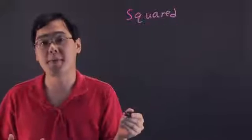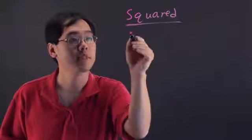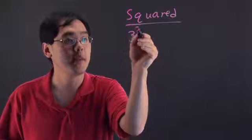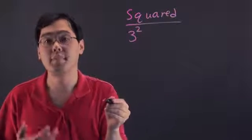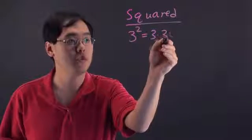So first we're going to discuss what squared means. Now when you square something that means you're raising it to the second power. For example, if you have 3 squared, that means you're multiplying by itself twice. So 3 squared means 3 times 3, which you know is 9.